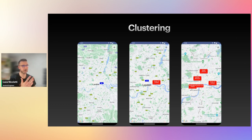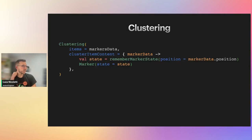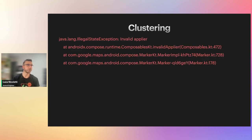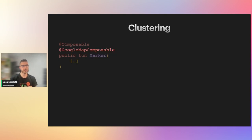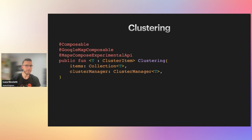For the clusterItemContent, for example, we use a rounded blue square for clusters and red for a single marker, displaying the count or title/description. Be aware that you cannot use the Marker composable function inside clusterItemContent — if you try, you get an IllegalStateException: 'Invalid applier.' This is because the clustering function's clusterContent and clusterItemContent accept composables marked as @UiComposable, whereas the Marker composable is marked as @GoogleMapComposable, so they cannot be used interchangeably.